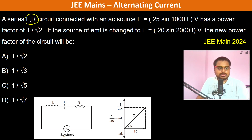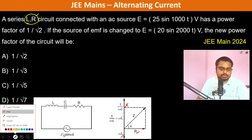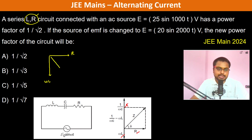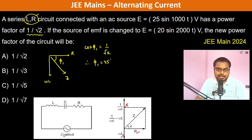In a series RL circuit, capacitance is not present, so we are left with R and ωL only. The impedance Z is shown in this direction. The AC source has a power factor of 1/√2, so cos φ₁ = 1/√2, which means φ₁ is equal to 45 degrees.